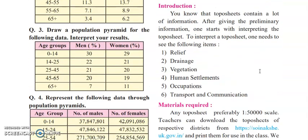In the introduction, they have given that in this topo sheet we have to see relief, drainage, vegetation, human settlement, occupation, transportation, and communication. All these things will be given to you in this topo sheet. Now the first question that comes to mind is: what is a topo sheet? A topo sheet is a chart of a certain specific area. It contains everything — water bodies, railway connections, airports, settlements, rivers — all these things are given in detail based on that specific area.